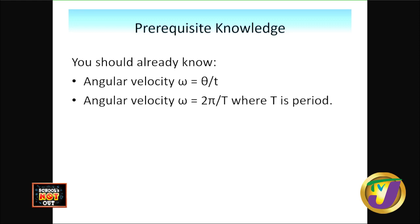There are some things you should already know from your lessons in circular motion: angular velocity is equal to angular displacement theta divided by time, and angular velocity is equal to 2π divided by T, where T is the period of the rotational motion.